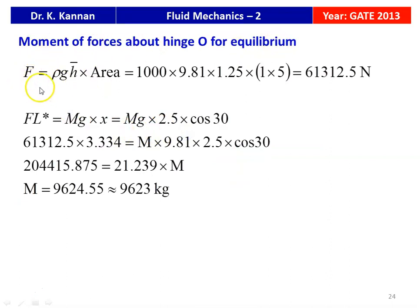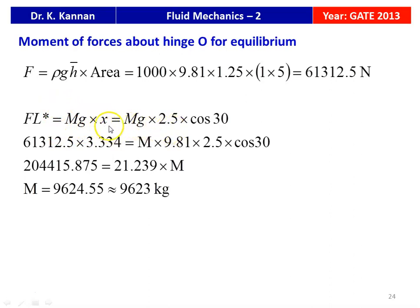Calculating the hydrostatic force on the gate: F = ρ × g × h̄ × A = 1000 × 9.81 × 1.25 × (1 × 5) = 61,312.5 N. Taking moments about the hinge: F × l* = m × g × (2.5 × cos30°). Substituting: 61,312.5 × 3.334 = m × 9.81 × 2.5 × cos30°. Left side = 204,415.875; right side = 21.239 × m. Solving: m = 9624.55 ≈ 9623 kg. That is the answer to the problem.